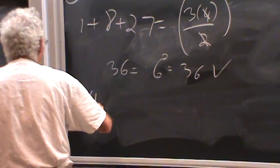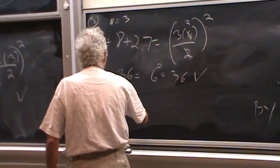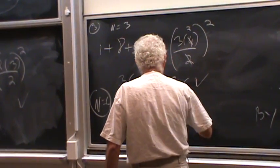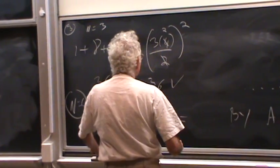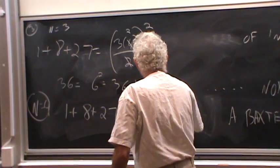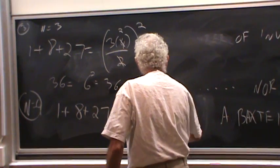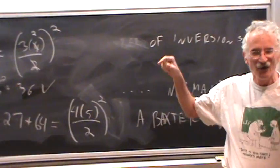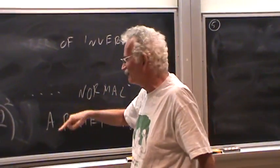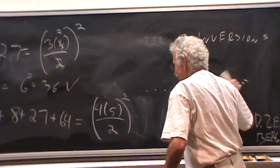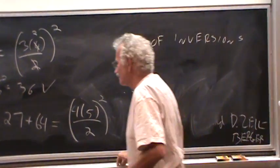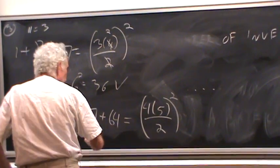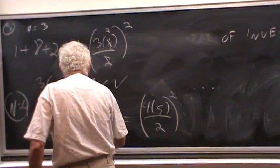N equals 4: 1 plus 8 plus 27 plus 64 equals 4 times 5 over 2 squared. By the way, a computer can do it in one nanosecond. This is only for illustrative reasons, a human computer. Then you get 9 plus 27, 36 plus 64, 100 equals 10 squared, 100.